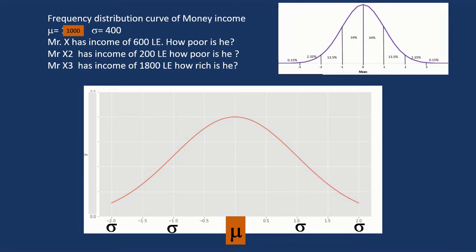So here we have the mean, 1,000. One standard deviation above the mean, so this value 1,400. Two standard deviations above the mean, 1,800. One standard deviation below the mean, 600. Two standard deviations below the mean, 200.